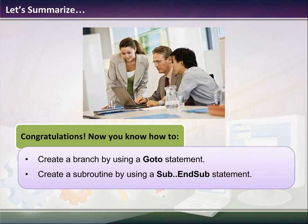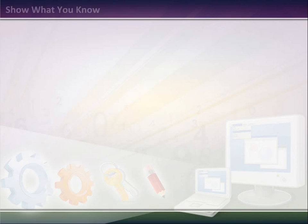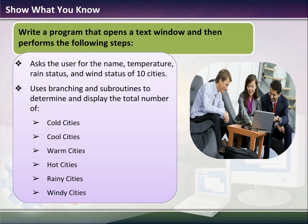Basically what we've done is we've tried to understand how to create a branch by using the goto statement, and how to create subroutines by using the sub and endsub statement. Now, what we should be able to do if we fully understand this is write a program that asks the user for the name, temperature, rain status, and wind status for ten cities. Using branching and subroutines, determine a way to display the total number of cold cities, cool cities, warm cities, hot cities, rainy cities, and windy cities. And so that is really a challenge. I think I may need to do a separate video for that.